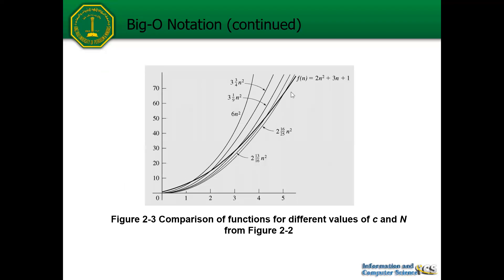Here we visualize the original function f(n) = 2n² + 3n + 1 alongside all possible c·n² curves extracted from this calculation, with different values of c — for example, 6n². We can notice that for larger values of n, the c·n² function is bigger than the original function. After n = 1, we see that 6n² is bigger than the original function, which is basically the definition of Big O: above the threshold, g(n) scaled by c exceeds f(n).